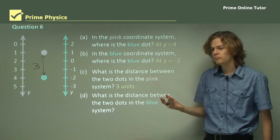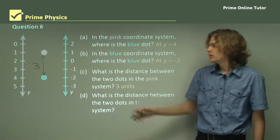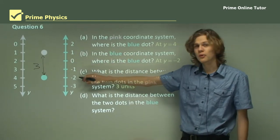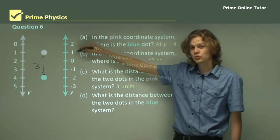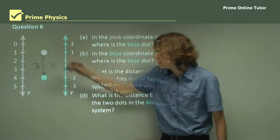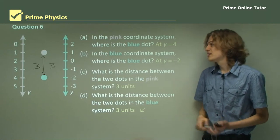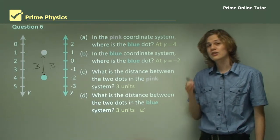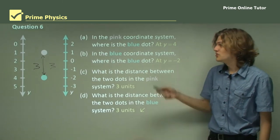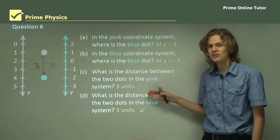Now let's look at the blue system. What's the distance between the two dots in the blue system? Here, the pink dot is at y equals 1 and the blue dot is at y equals minus 2. The difference between 1 and minus 2 is 3 units. So we see that in the blue coordinate system the distance between the two objects is also exactly 3 units. By changing coordinate systems, although the positions of the objects measured might change, the distance between two objects stays the same.